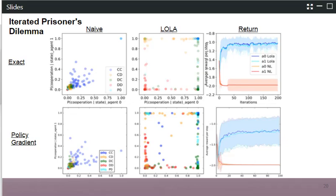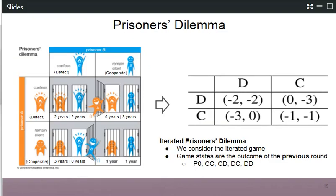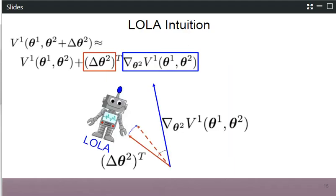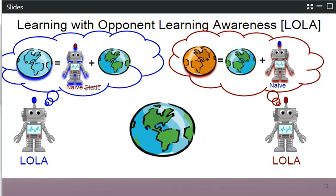What happens if you have multiple opponents? This method is general. Clearly, if it works for two agents, you can imagine Alice playing against a whole number of different Bobs. In this case, you get additional terms from the learning steps of all the other opponents, and mathematically you simply sum across all these different opponent terms. So the method is a general-sum multi-player method that can be applied in any setting with any number of agents.